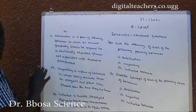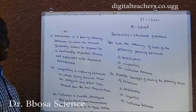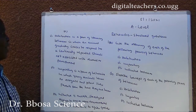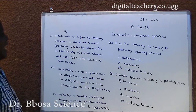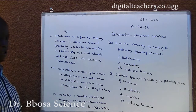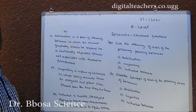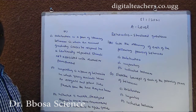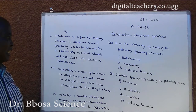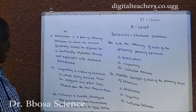A. Number 1: Habituation is a form of learning behavior in which an animal gradually ceases to respond to a continually repeated stimulus, not associated with reward or punishment.